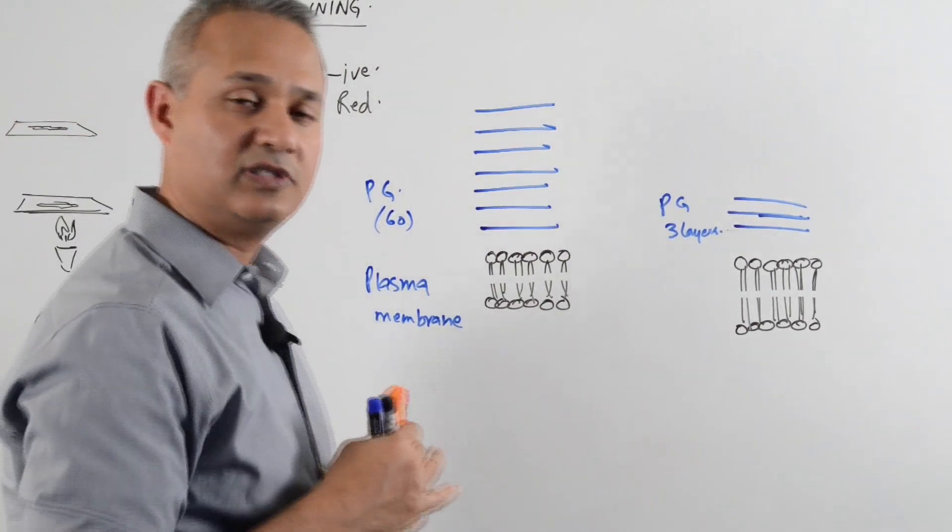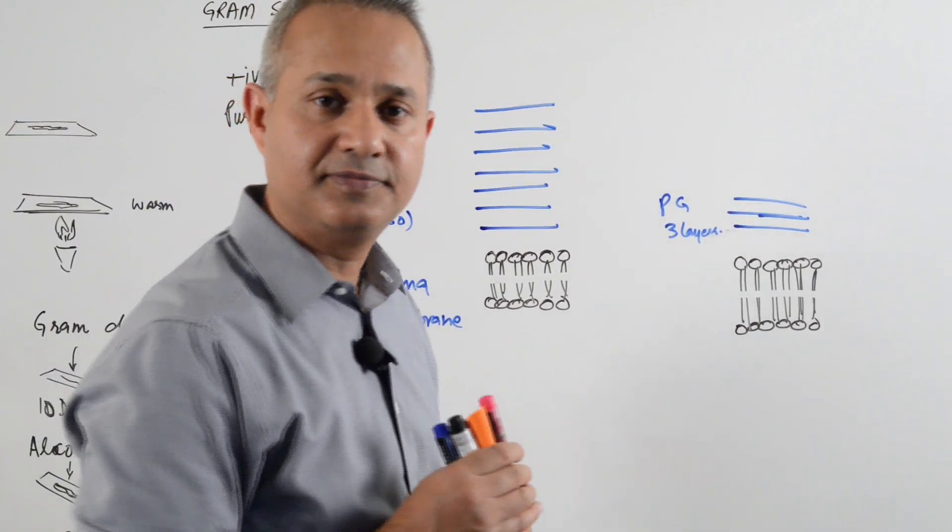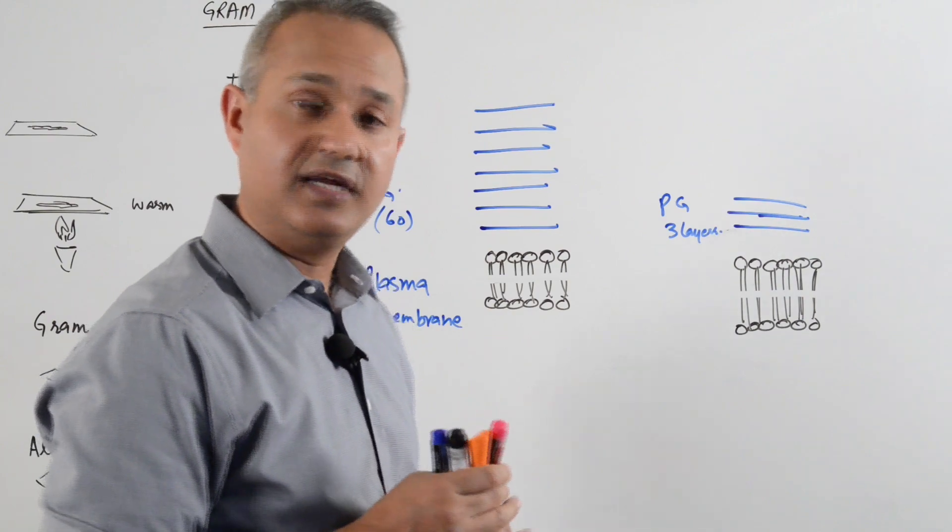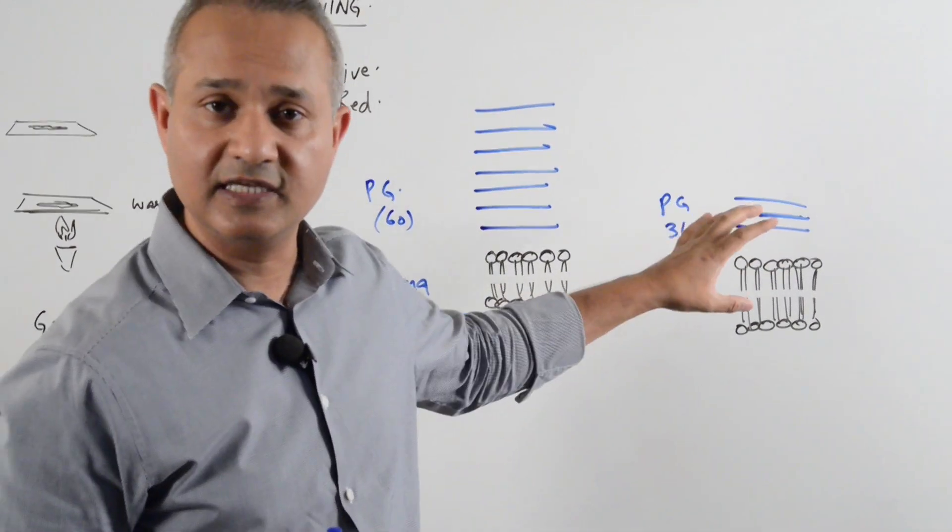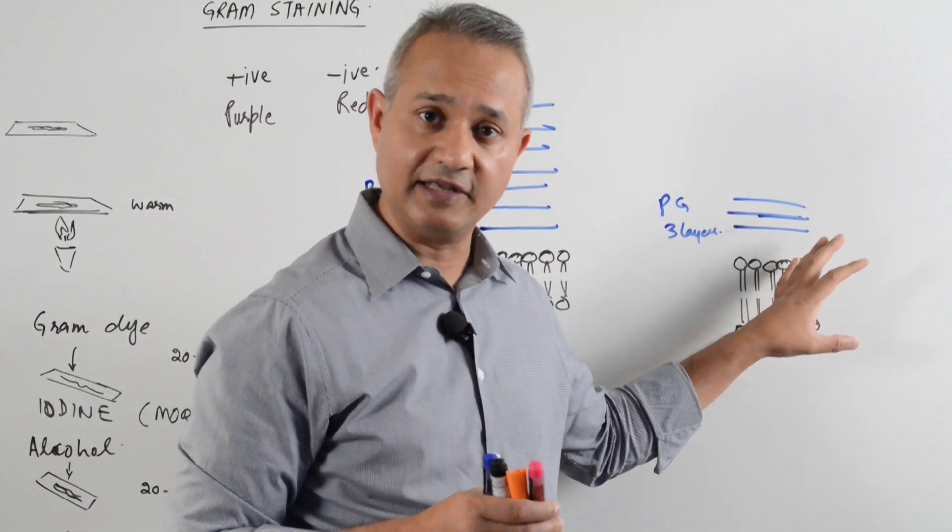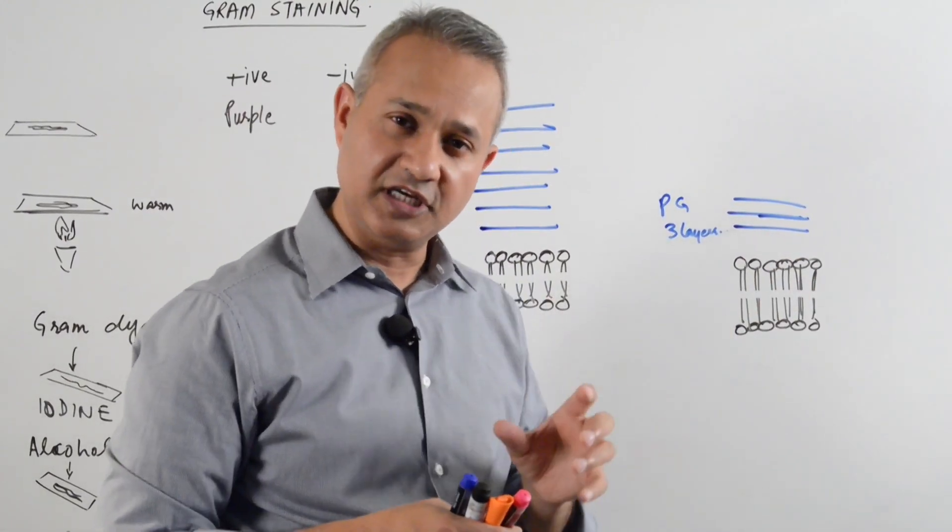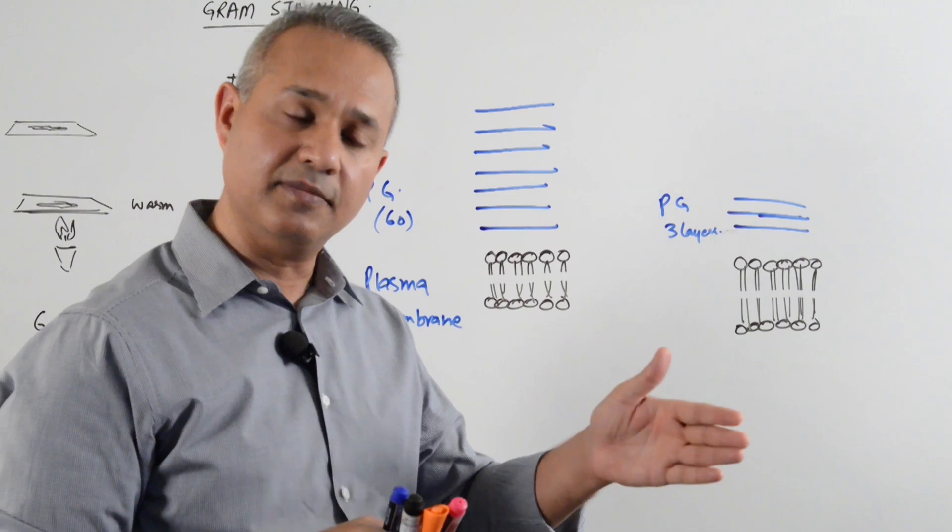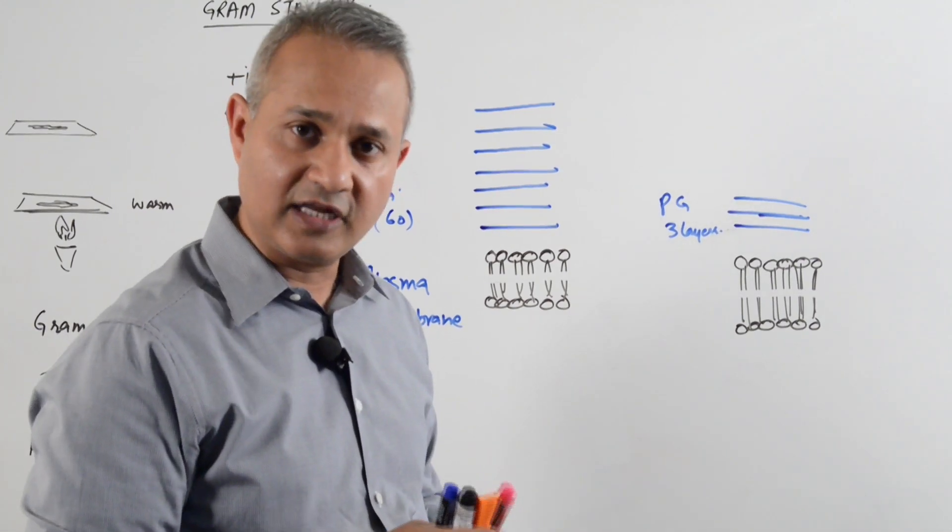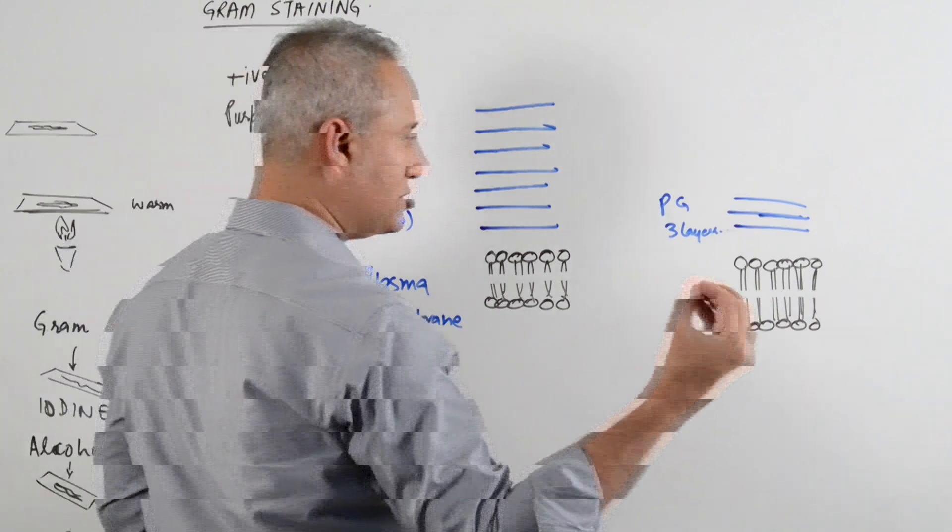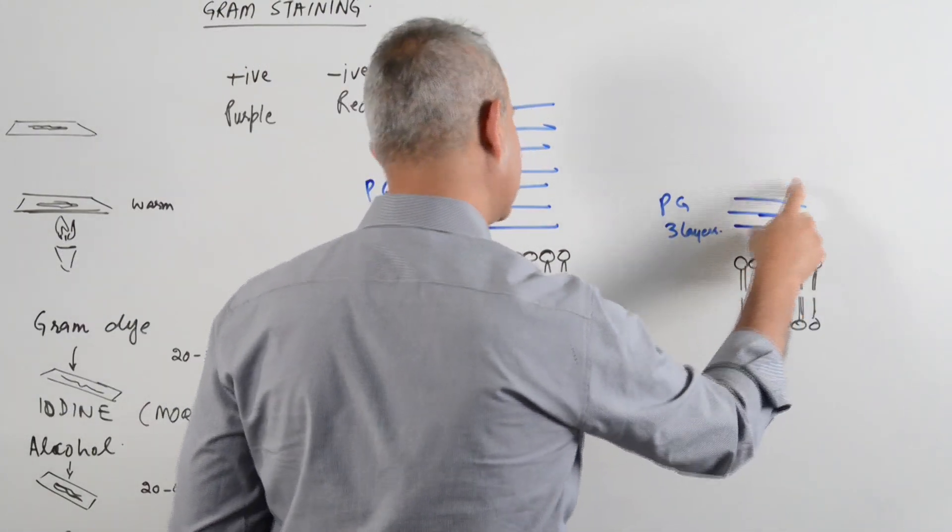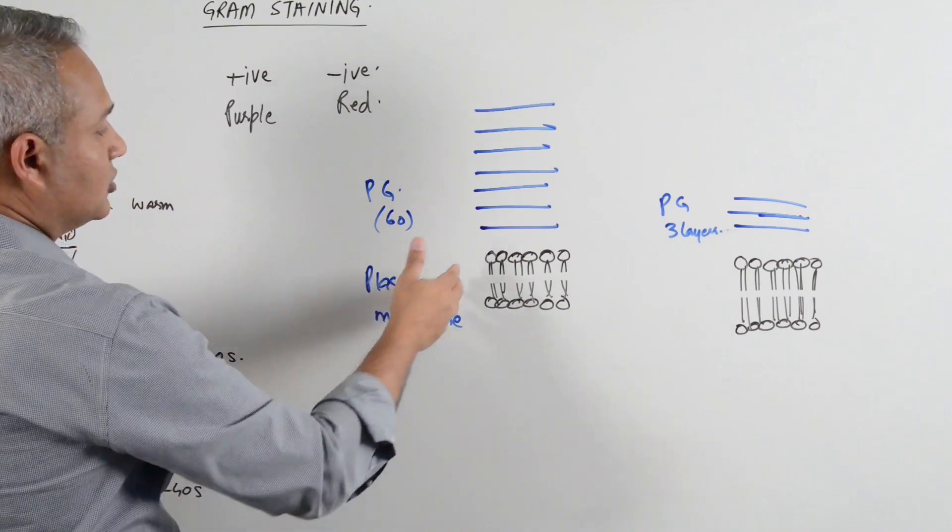What is the most important thing in the periplasmic space? Beta lactamases. The enzyme set here that can break down the penicillin. That is why penicillins are not that effective for the Gram negative. There have been lots of molecular changes for the penicillin and they have made them more better for the Gram negative. That is what cephalosporins are. But if pure penicillin comes in here, there are beta lactamases that sit here and they break them.